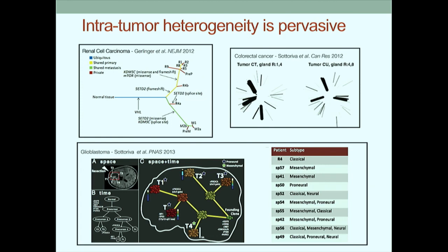The fundamental question is how much does intratumor heterogeneity confound our best efforts at precision medicine? When we sample different regions - in this case of a patient with glioblastoma done in the operating suite with a fabulous surgeon who could isolate different regions - we found that a singular patient could be classified in as many as three of the recently described four molecular subgroups of glioblastoma.